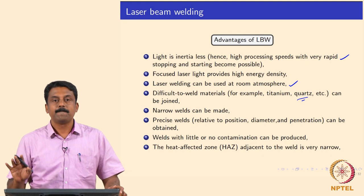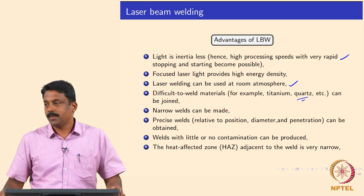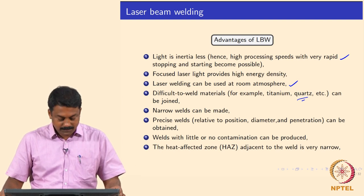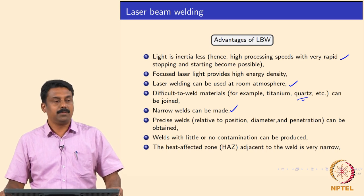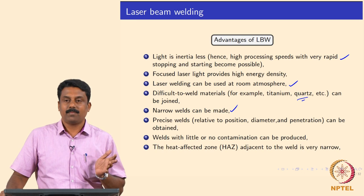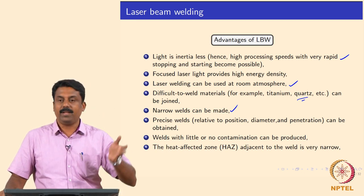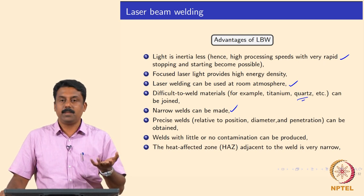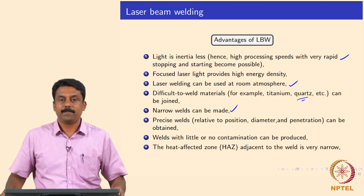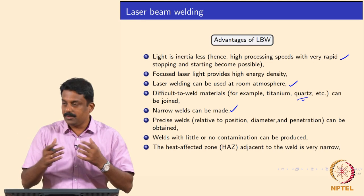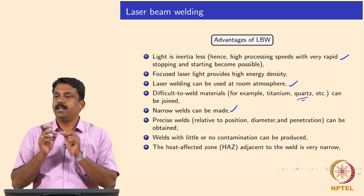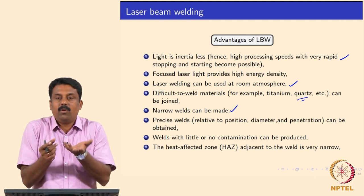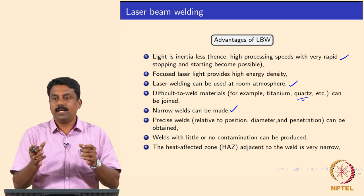As long as the material absorbs laser, we can weld those materials using laser. Some materials you know cannot be used with arc - it is very difficult to fuse - whereas laser can be used. Based on the beam size, spot size, and fit-up, we can also make very narrow and very precise welds. Because laser can be manipulated using optics, even if a location is very difficult to reach, the laser source can be focused onto geometry not reachable otherwise by arc or resistance spot welding.